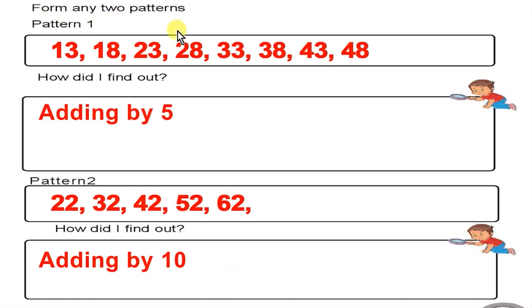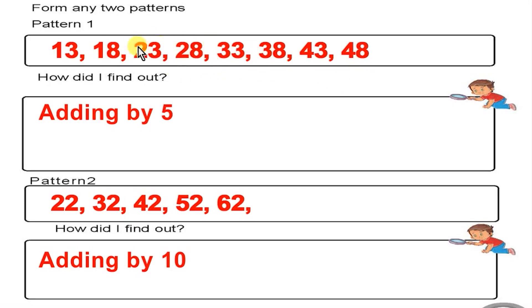Next, form any two patterns. Pattern 1: 13, 18, 23, 28, 33, 38, 43, 48. What is common in the above pattern? The difference between any two numbers is 5. 18 minus 13 is 5. We add 5 each time: 13 plus 5 is 18, 18 plus 5 is 23, plus 5 is 28, plus 5 is 33, plus 5 is 38, plus 5 is 43, plus 5 is 48.